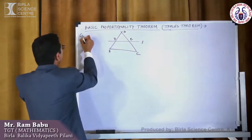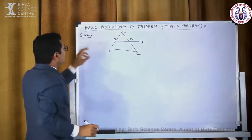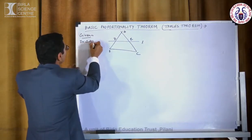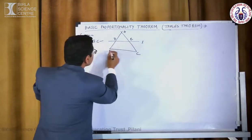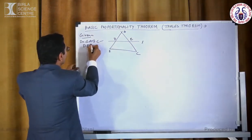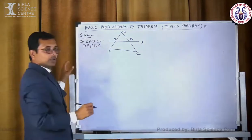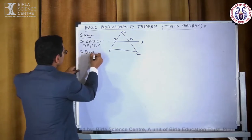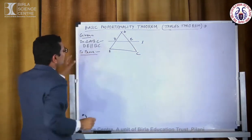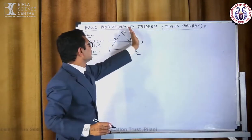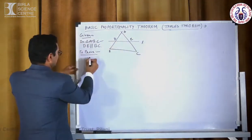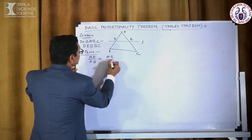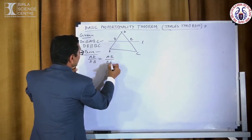What is given? In triangle ABC, DE is parallel to BC. What do we have to prove? We have to prove that AD upon DB is equal to AE upon EC.